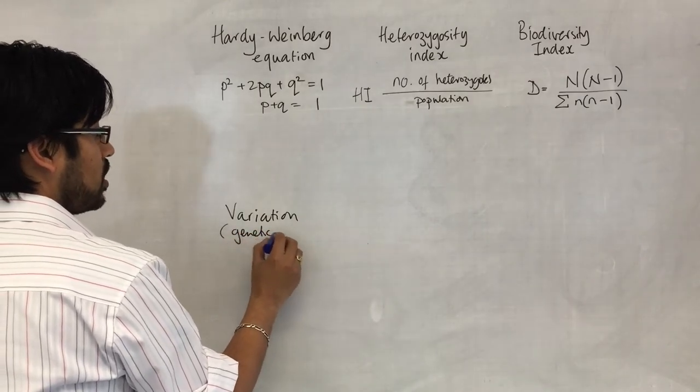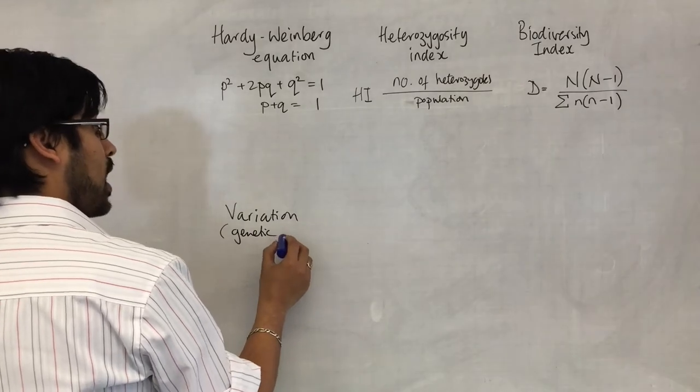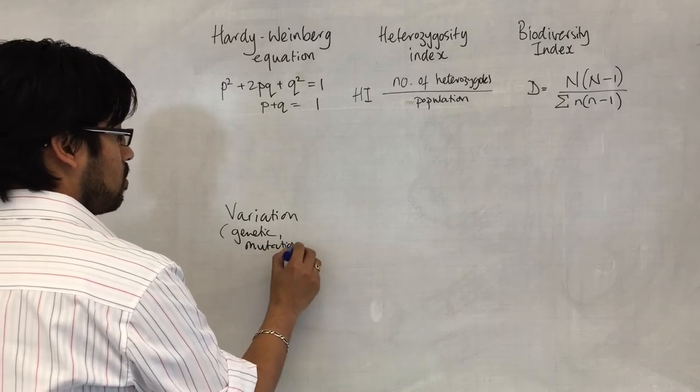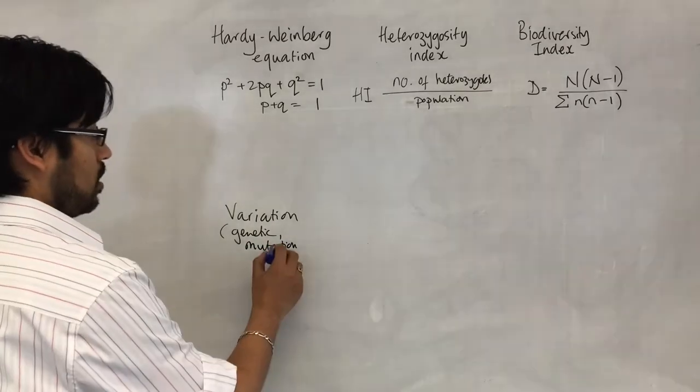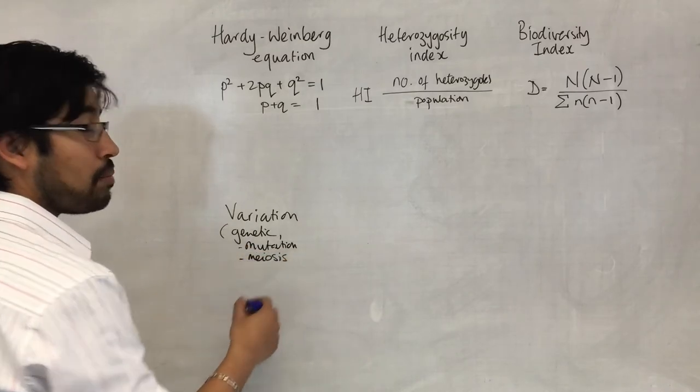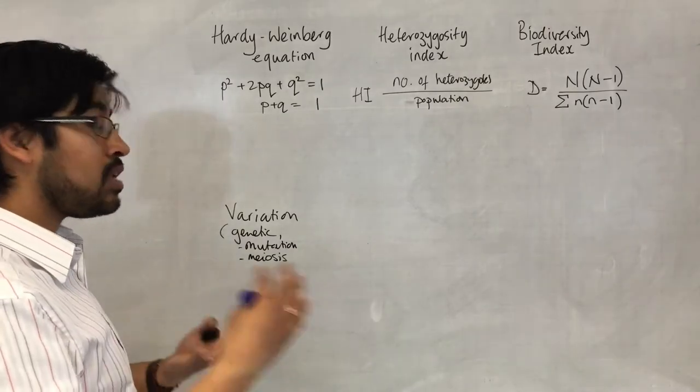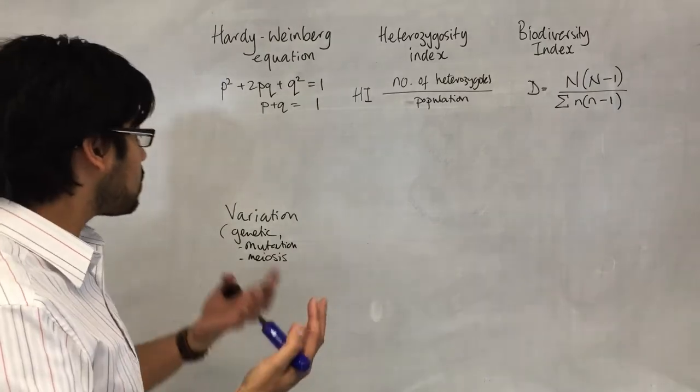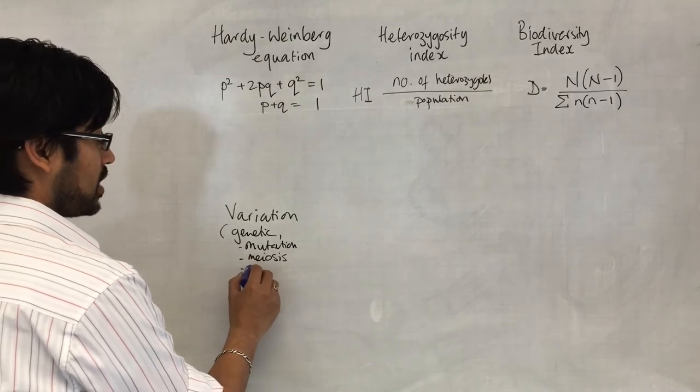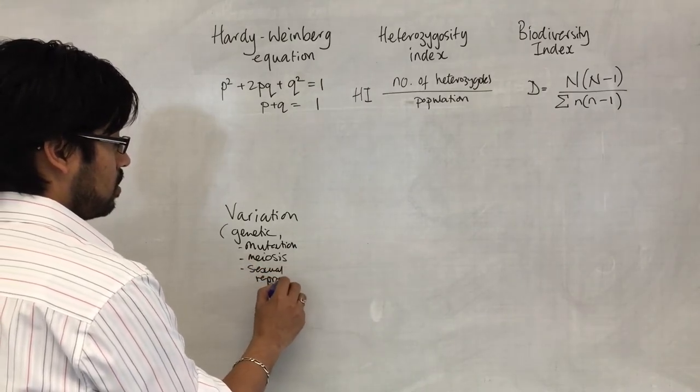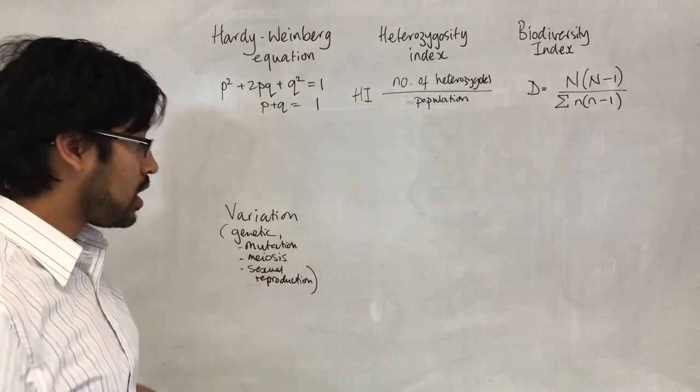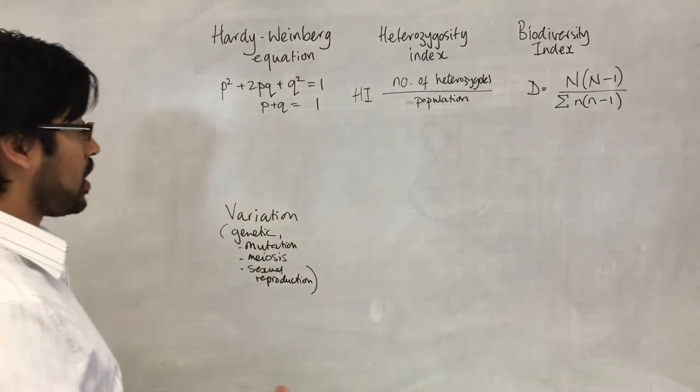This is usually genetic variation. It relates to things like mutation that makes new alleles. It also is related to the processes in meiosis, crossing over and independent assortment that generates new combinations of alleles, as well as sexual reproduction that allows new combinations of alleles to occur.